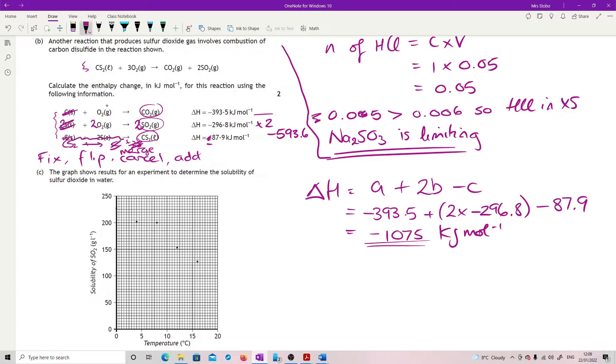Because we've got this and three of these goes to one of those and two of those. So I'm happy that my whole thing has been done correctly. Add this up. So minus 393.5 minus 593.6 minus 87.9 gives me exactly the same answer. Whichever way works for you.